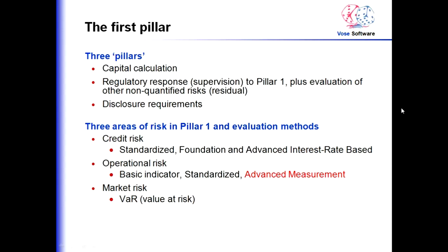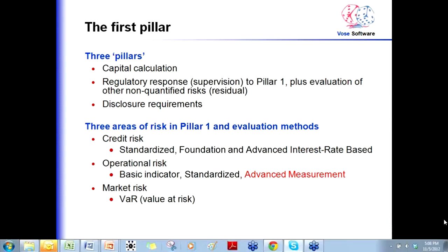There are three areas of risk evaluated in Pillar 1: credit risk, operational risk, and market risk. For credit risk there are different options — a standardized version, the foundation, and the advanced interest rate based method. We are going to look at the advanced interest rate based method. For operational risk there are again three methods: a basic indicator approach, a standardized method, and an advanced measurement approach. We are going to look at advanced measurement. Market risk uses a value at risk approach.